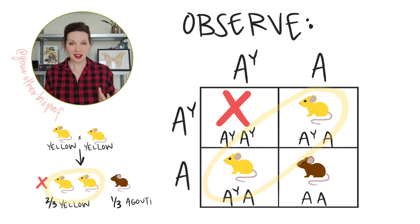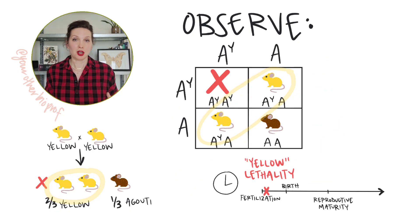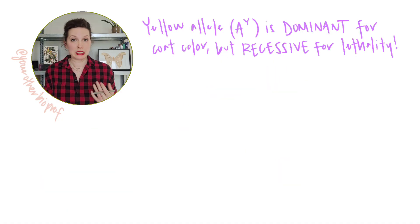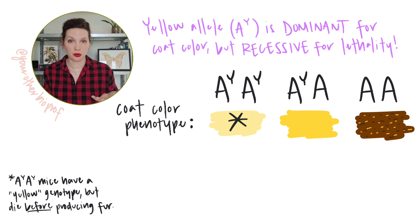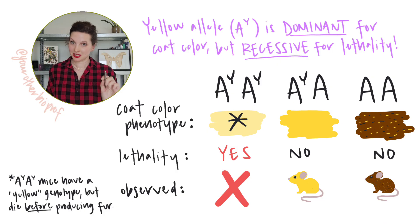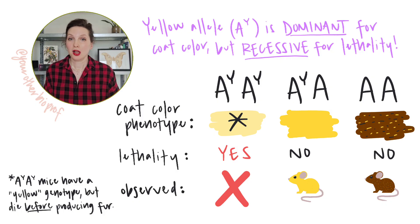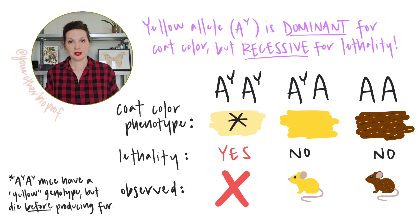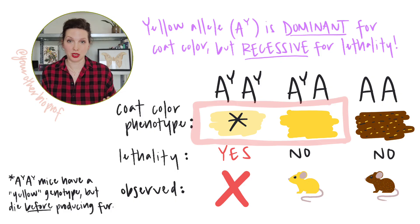Why? Well, the lethality occurs early in development, so the one quarter of mice that you would expect to see as homozygous yellow aren't observed. The yellow allele encodes a dominant trait, as we saw with the heterozygotes being yellow. But because two copies of the yellow allele are required for lethality, yellow is a recessive lethal allele. Recessive lethal alleles can encode dominant or recessive traits, but they only lead to death when two copies are found in an individual. So here, yellow was dominant to agouti for the coat color phenotype, but recessive for lethality.